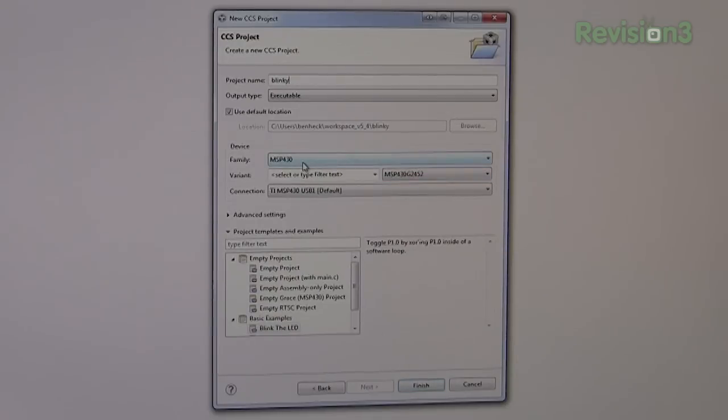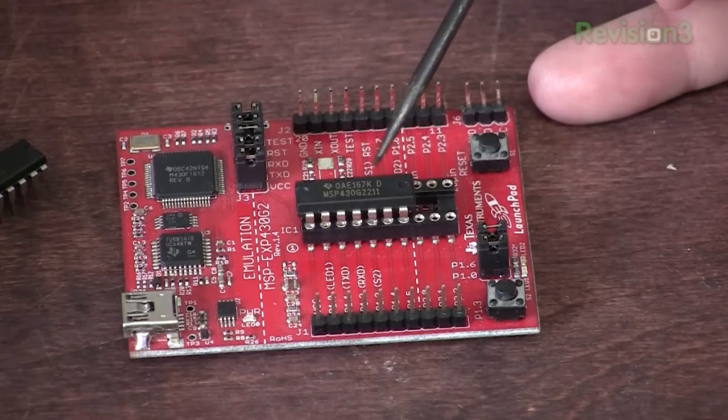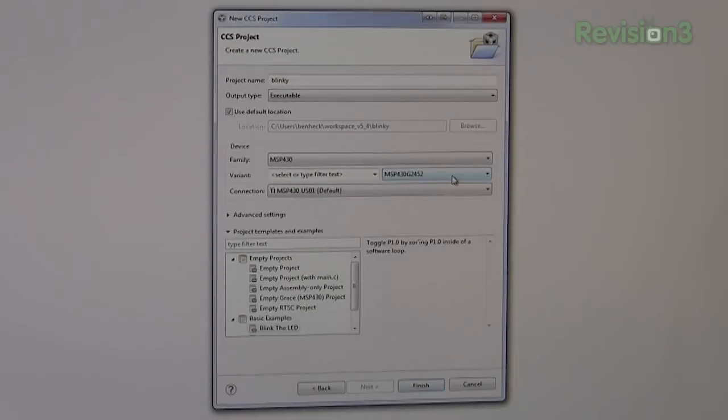Now this is important, Family, MSP430, Variant, we don't need that. But this is actually the type of MSP430 we're using, so we have to make sure this number matches what's on the chip. Okay, so I believe this is what we have here. Yep. All right, let's hit Finish.